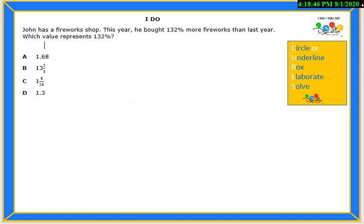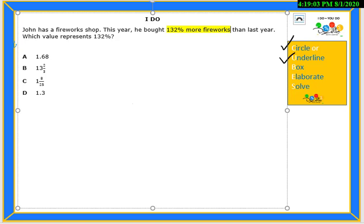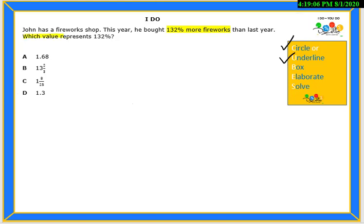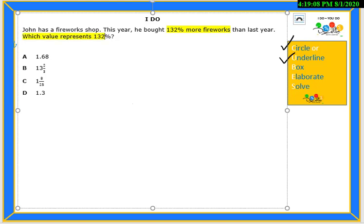On the right side of the screen you will see the cube strategies that we will be using today. We will start with circle or underlining keywords, but if you prefer you can also highlight. 132% more and which value represents 132.